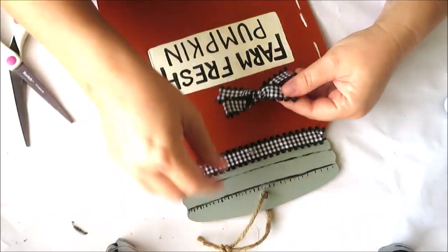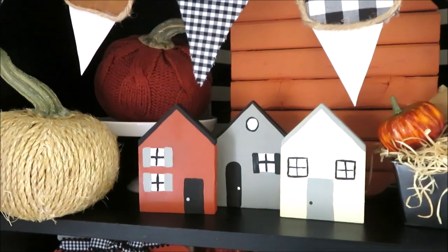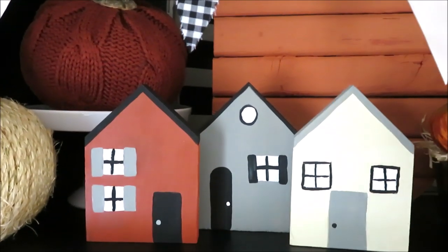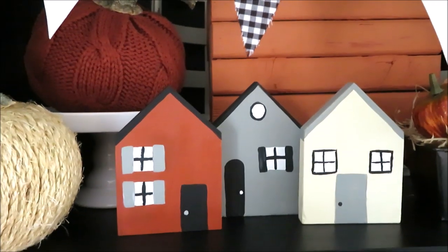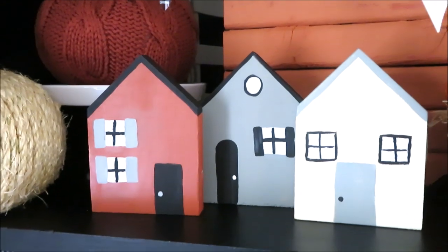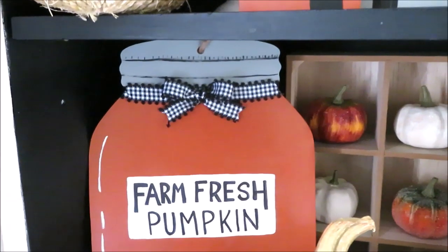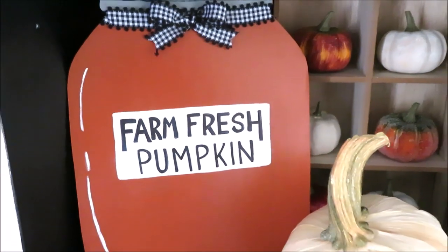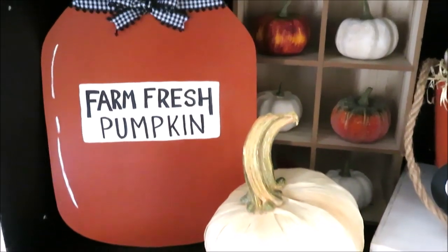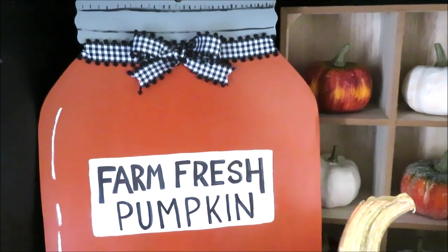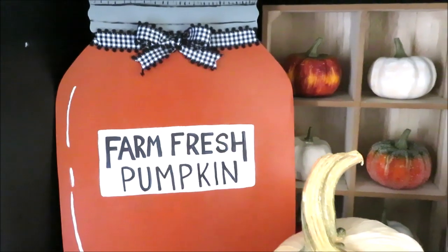And that's all there is to these simple DIYs. And really, each of them just cost a dollar. Each little house was a dollar at Michael's, and my jar sign is just a dollar from Dollar Tree. If you have some paint on hand, you can transform these things and create your own fall decor for pennies. Let me know down in the comments which is your favorite. I hope you all enjoyed this finale to our week-long series of Fall in July. Thank you all so much for watching, and I'll see you back very soon.